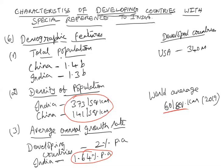We still have a long way to go before reaching less than 1% per annum. In developed countries, the average growth rate is approximately 0.7% per annum. They are able to control the birth rate, and the density and size of population are also much less in those countries.